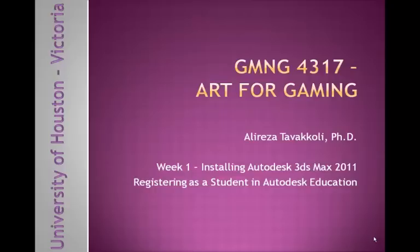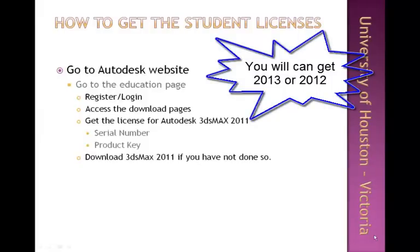Let me show you how to use the Autodesk educational website to set up an account and access the software packages available for students. In a nutshell, you go to the Autodesk website, find the educational pages, and I'll show you in the video how to do this. You register as a student, or if you've already registered you simply log in. Then find the download pages and locate Autodesk 3ds Max 2011, English version, 32 and 64-bit edition.